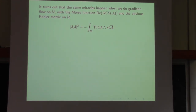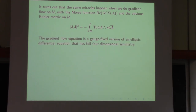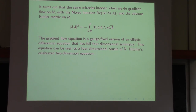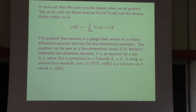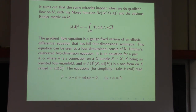The same miracles happen for gradient flow in the space of complex connections, with the Chern-Simons function as Morse function and with the obvious Kähler metric. The gradient flow equation is again a gauge-theoretic version of an elliptic differential equation with full four-dimensional symmetry. This equation is the four-dimensional cousin of the celebrated Hitchin equation in two dimensions. It's an equation for a pair A and φ, where A is the connection on the G-bundle and φ is a one-form valued in the adjoint representation.